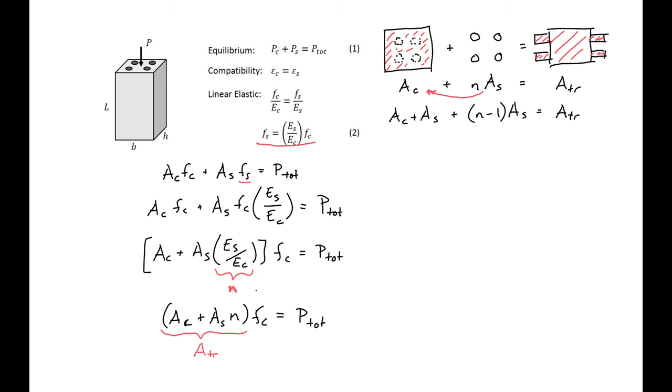We know that our AC plus AS is just our gross area, which in this case would just be our base times height without taking out the area of steel, plus N minus 1 times AS.